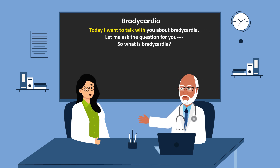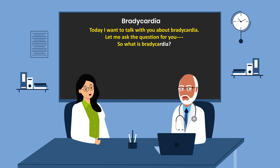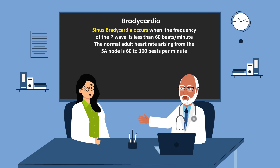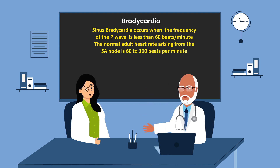Today I want to talk with you about bradycardia. So what is bradycardia? Sinus bradycardia occurs when the frequency of the P wave is less than 60 beats per minute. The normal adult heart rate arising from the SA node is 60 to 100 beats per minute.